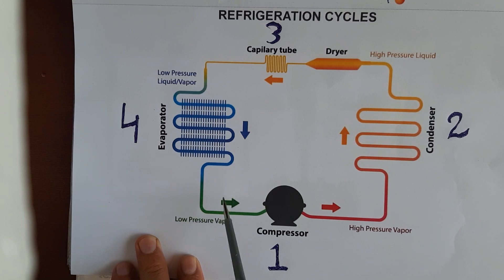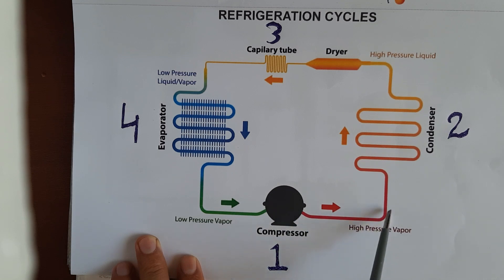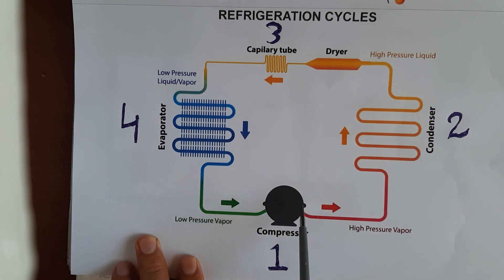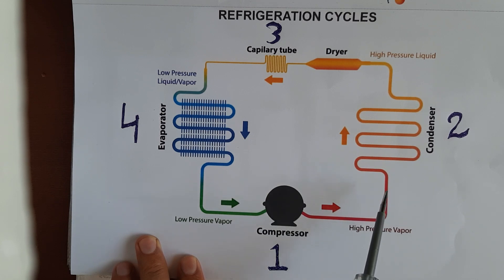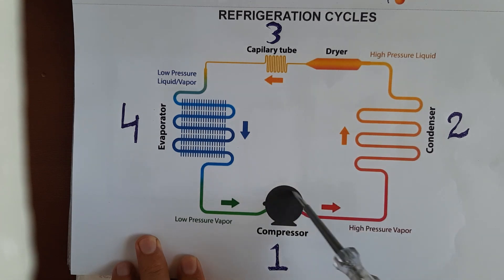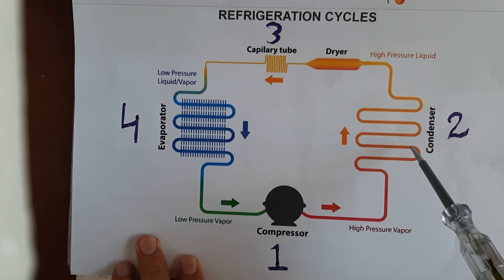The function of the compressor is to suck the vapor refrigerant from the suction line and release it with high pressure and high temperature. You can see the vapor refrigerant going into the compressor — the compressor is sucking it in and releasing it with high pressure and high temperature — and after that it goes to the condenser.